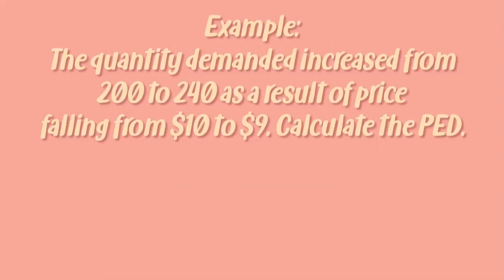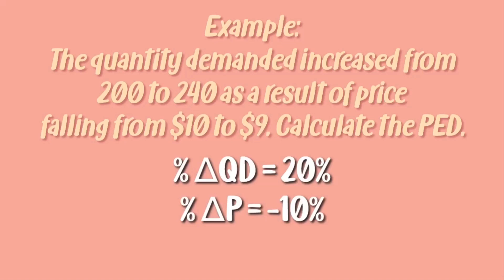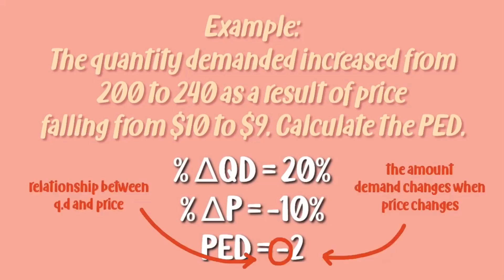Now let's take a look at this example. The question says the quantity demanded increased from 200 to 240 as a result of price falling from $10 to $9. Calculate the PED. So your percentage change in quantity demanded would be 20% and your percentage change in price is negative 10%. Therefore your PED is negative 2.